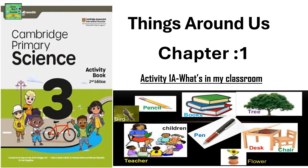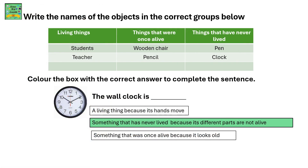Things Around Us, Activity 1A: What's in My Classroom. Write the names of the objects in the correct groups. Living things: students and teacher. Things that were once alive: the wooden chair and pencil. Things that would never be alive: pen and clock.